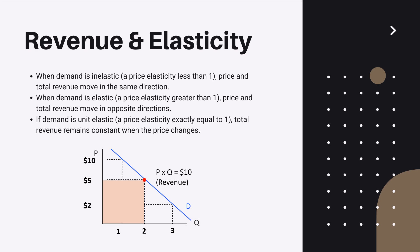And the other scenario: when demand is elastic, a price elasticity is greater than one, price and total revenue move in opposite directions, which means if you increase your price you decrease your revenue. And the third one, if demand is unit elastic, the price elasticity is exactly equal to one, total revenue remains constant when the price changes.